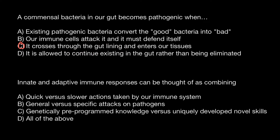Variant B says: our immune cells attack it and it must defend itself. Our immune cells always attack any bacteria — it doesn't matter if it's commensal or pathogenic. Our immune cells attack any antigens, which can be in the form of different chemicals, viruses, and many other foreign materials.